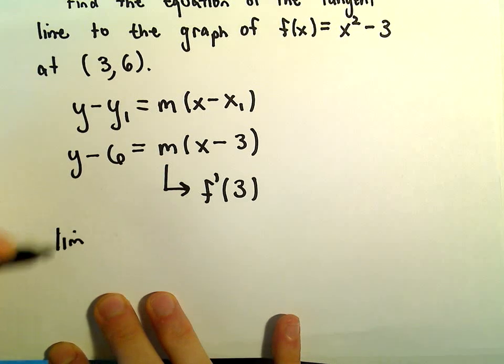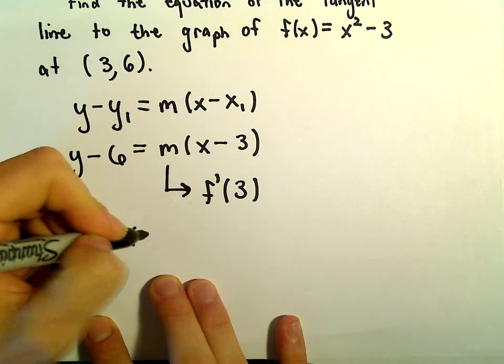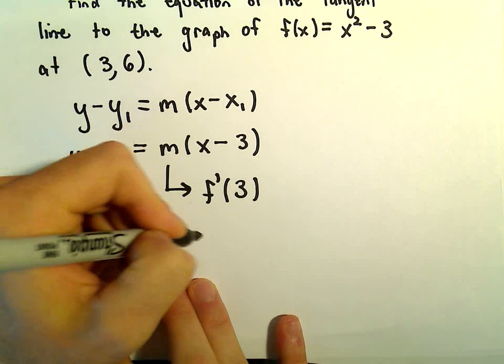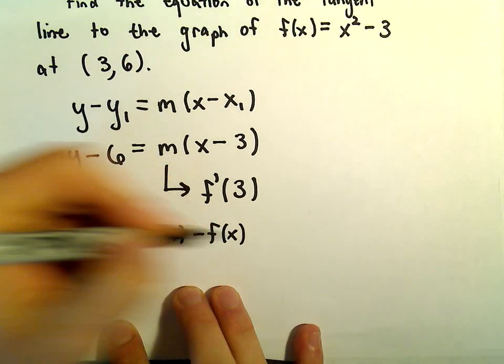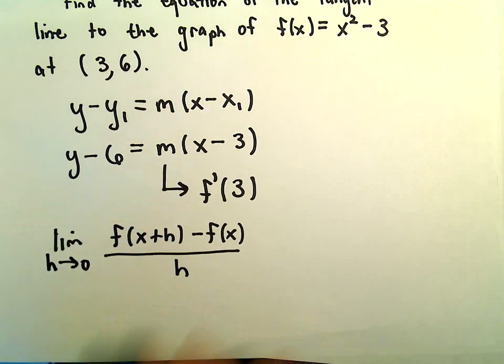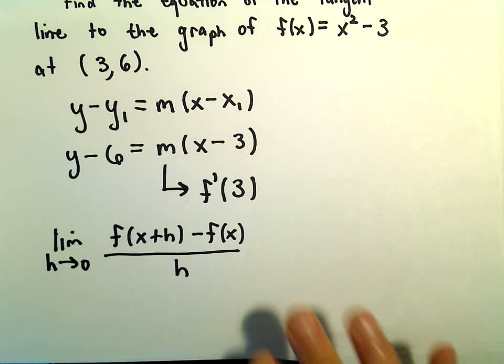We have the limit as h goes to 0 of [f(x+h) - f(x)]/h. We're going to use our function x² - 3.